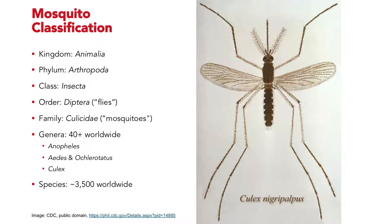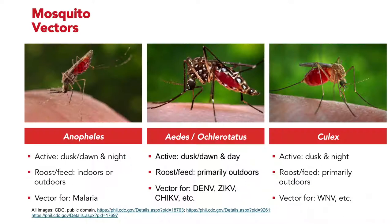Three of those genera are important disease vectors: the Anopheles mosquitoes, the Aedes mosquitoes, and the Culex mosquitoes. You can see the segmented body characteristic of all arthropods, six legs characteristic of insects, and while it looks like this critter has two wings, it actually has four. The two front wings are the flight wings and the two rear wings are tiny vestigial organs used for stabilization. That long proboscis in the front is what it uses to drink either blood or nectar.